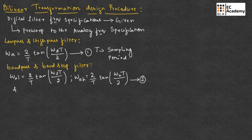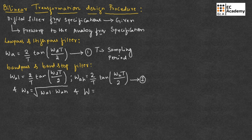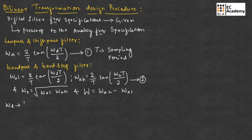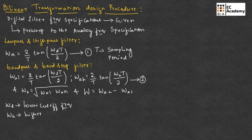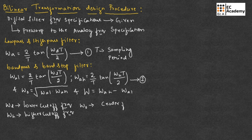Also, omega_0 is equal to square root of omega_AL into omega_AH, and capital W is equal to omega_AH minus omega_AL. Here, omega_L is the lower cutoff frequency, omega_H is the higher cutoff frequency, omega_0 is the center frequency, and capital W is the bandwidth.